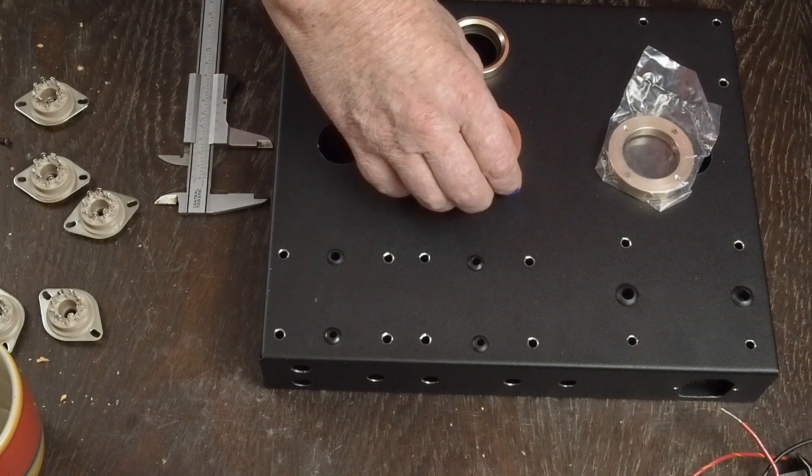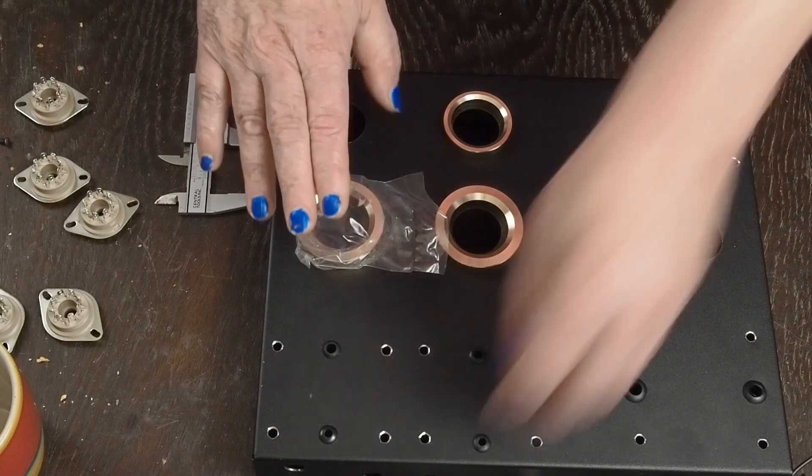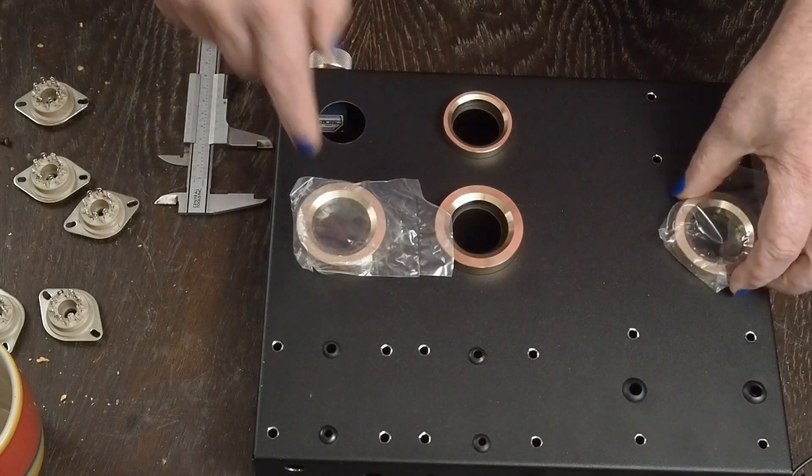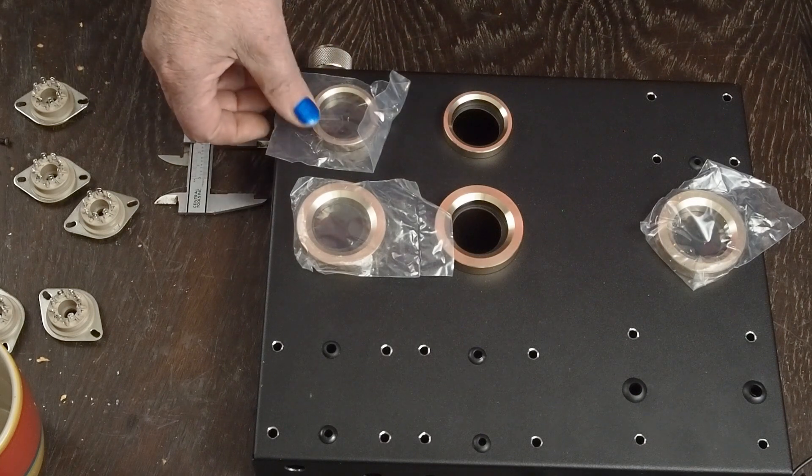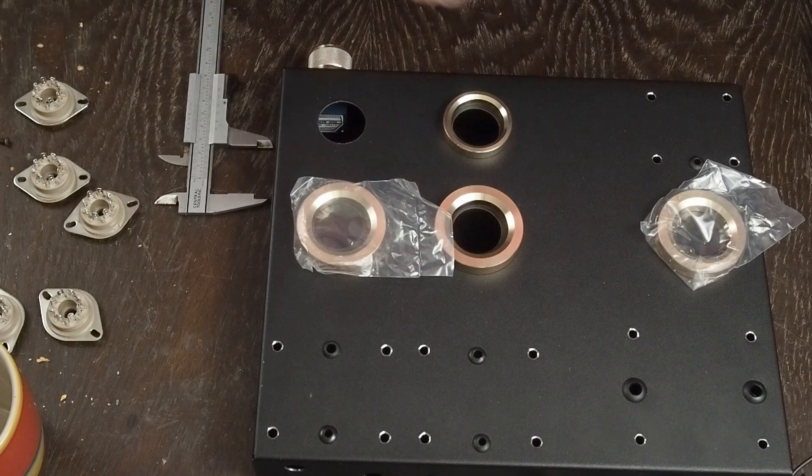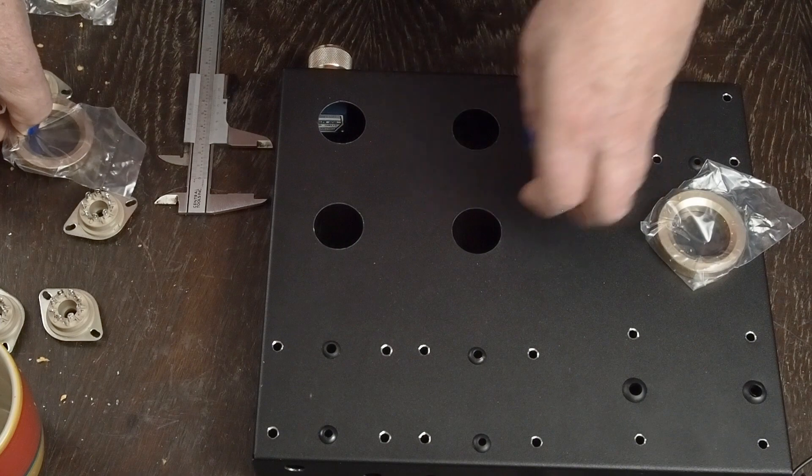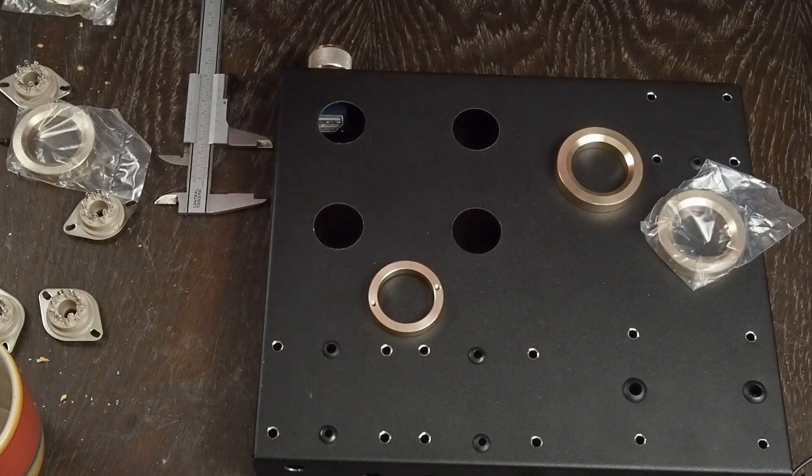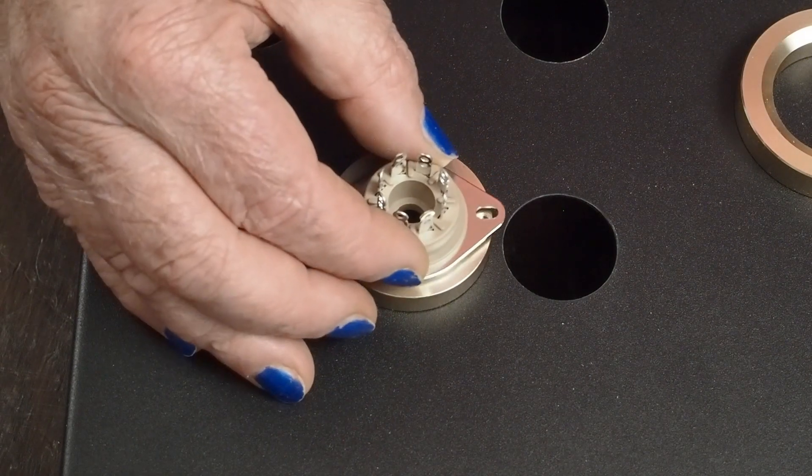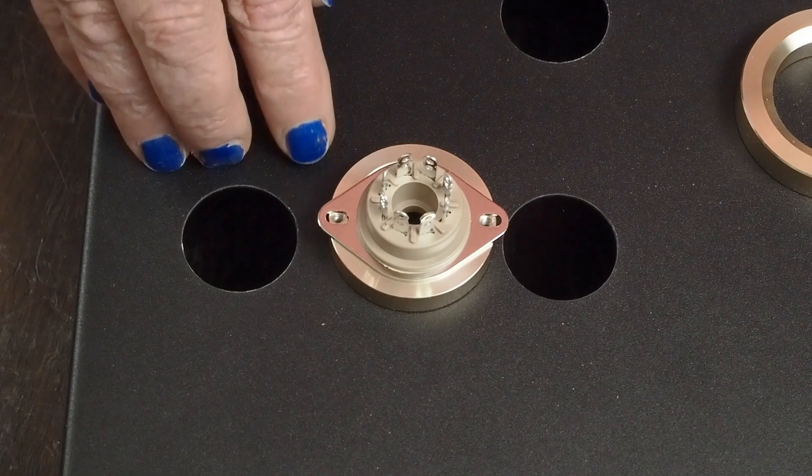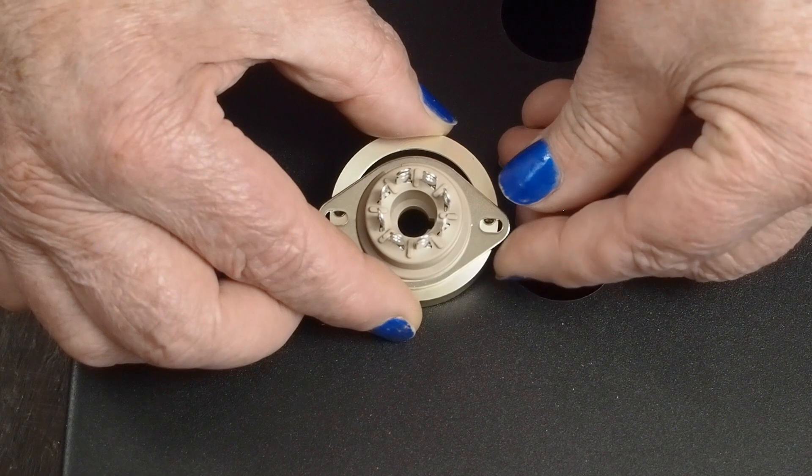We'll use the larger ones for the two output tubes and the rectifier, and then another small one for the other driver tube. A little trick with these—let me zoom in here. On the smaller ones, it's no problem. The holes line up with the socket and you can just mark them and drill them.